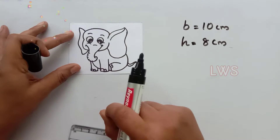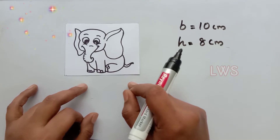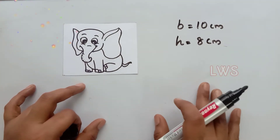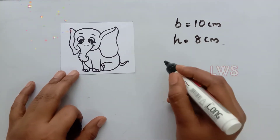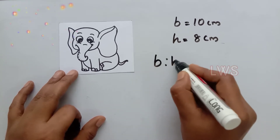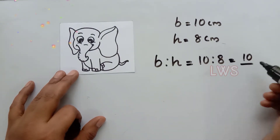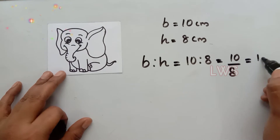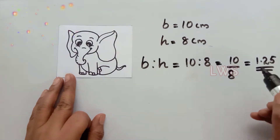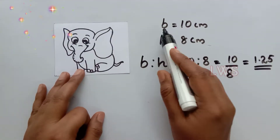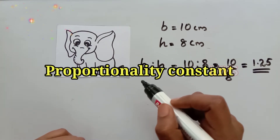Remember, we can always find the ratio of two similar quantities. For example, we can find the ratio of two lengths, but we cannot find the ratio between a length and a weight. Now the ratio between base and height is 10 is to 8, which is equal to 1.25 — meaning the base is 1.25 times larger than its height. This quotient we got is called the proportionality constant.